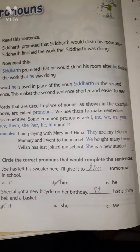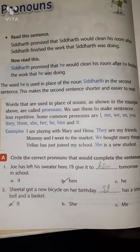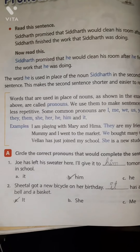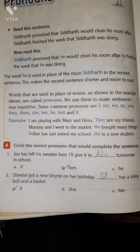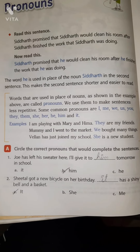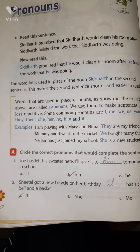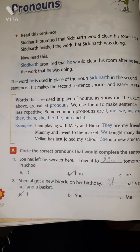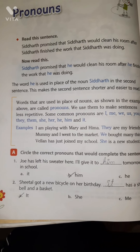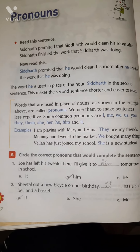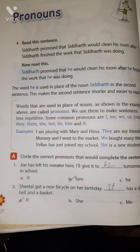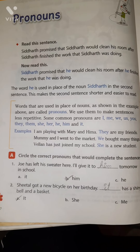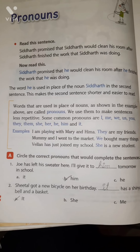Words like he, she, him — all these are used in place of a noun, so we call them pronouns. We use them to make sentences less repetitive, meaning that words like 'Siddharth' don't have to repeat. Some common pronouns are: I, me, we, us, you, they, them, she, her, he, him.